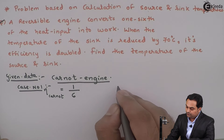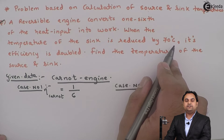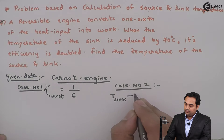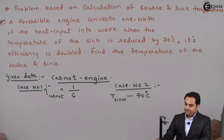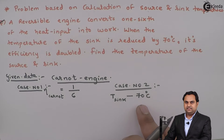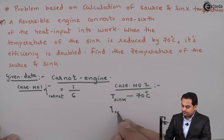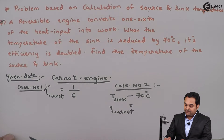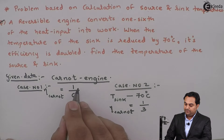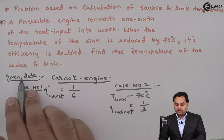In Case Number 2, the condition is: when the temperature of the sink is reduced by 70 degrees Celsius — that is T_sink minus 70 degrees Celsius — its efficiency is doubled. So if we reduce the sink temperature by 70 degrees Celsius, the efficiency of the Carnot engine is doubled, meaning now instead of 1/6 the efficiency will be 1/3, since it is doubled — multiply by 2, so 2 and 6 cancel, leaving 1/3.